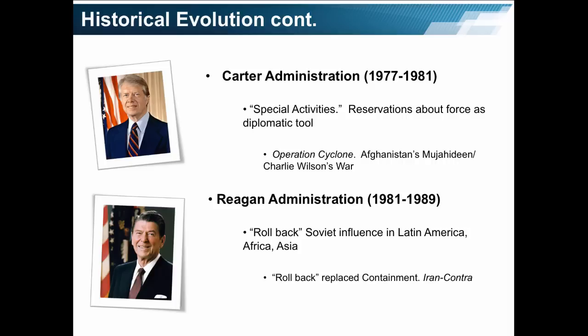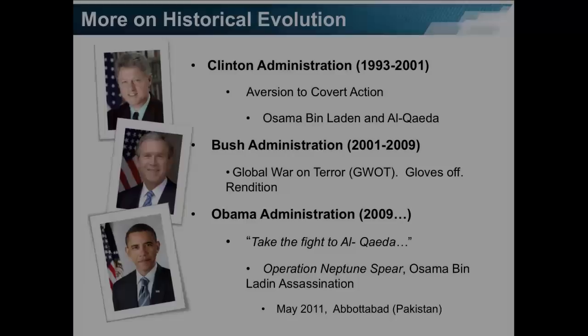During the Carter administration, covert actions were known as special activities. This administration had profound reservations about the use of force as a diplomatic tool. Covert actions at this time are best represented by Operation Cyclone, which involved the arming and training of Afghanistan's Mujahideen by the U.S. government. This is also known as Charlie Wilson's War. During the Reagan administration, covert actions were used to roll back Soviet influence in Latin America, Africa, and Asia. Roll back replaced the containment policies, particularly of the Eisenhower administration, and are best represented by Iran-Contra.